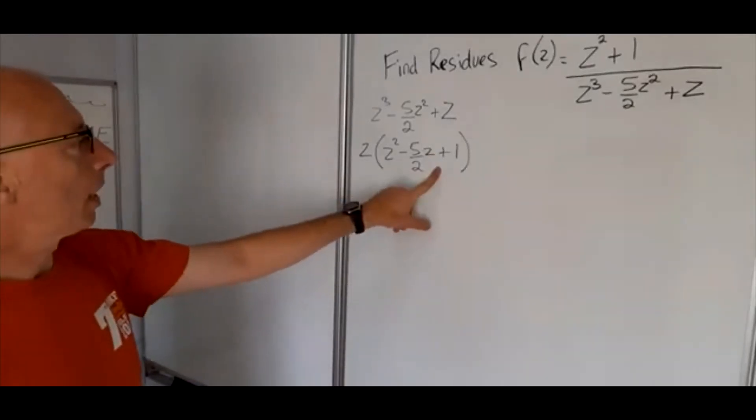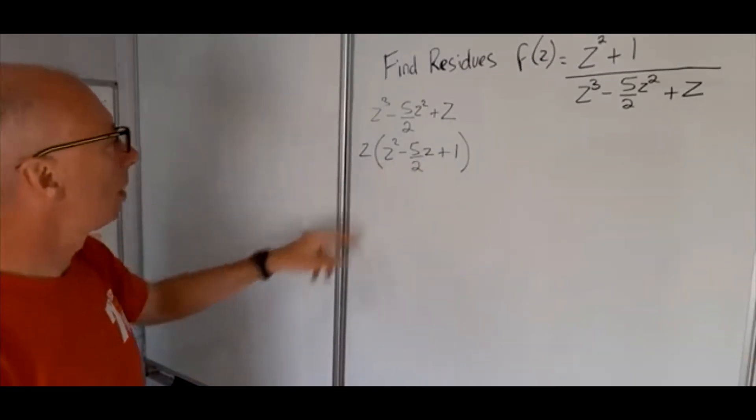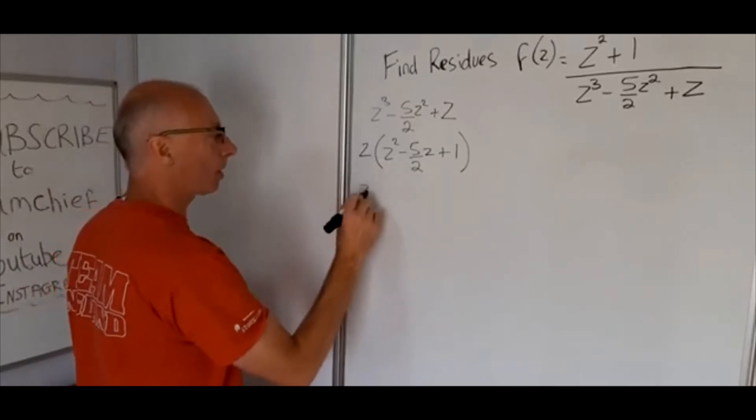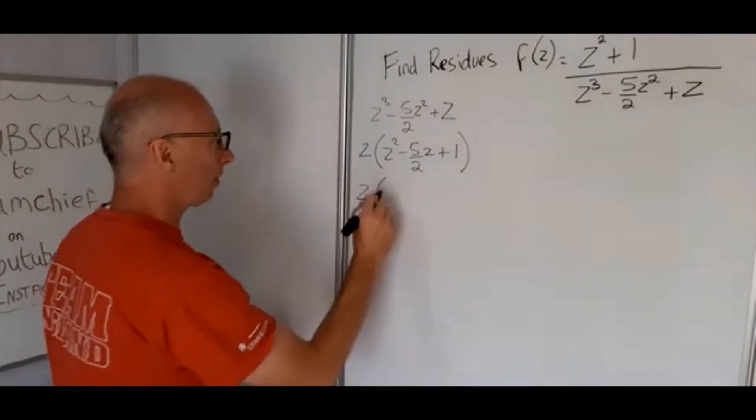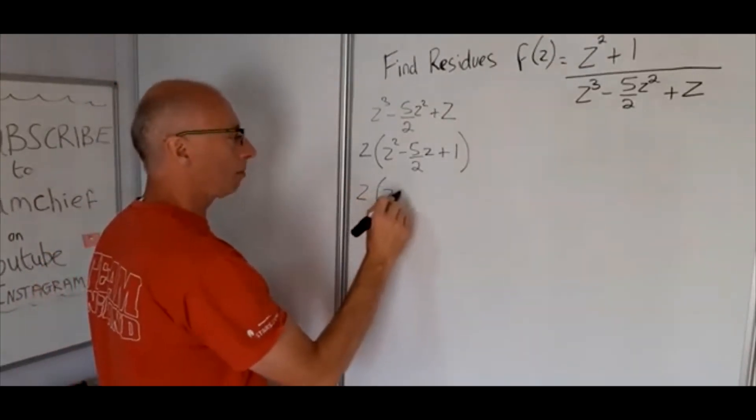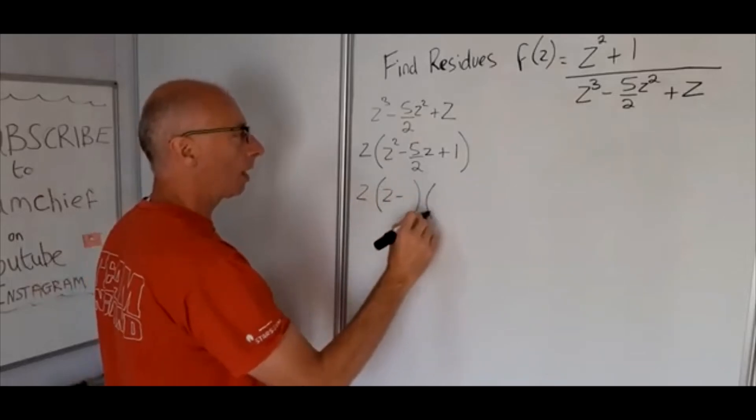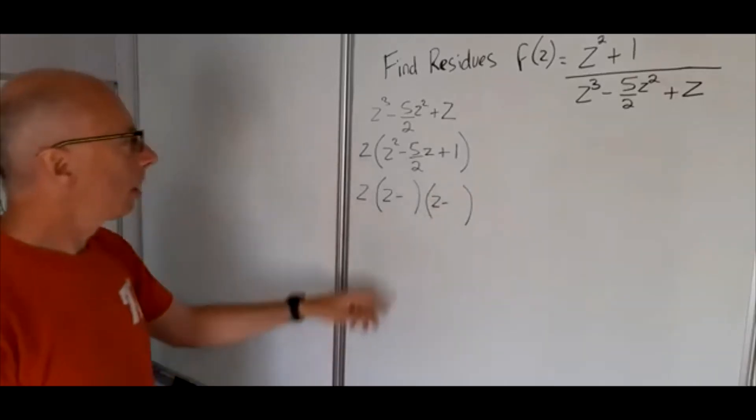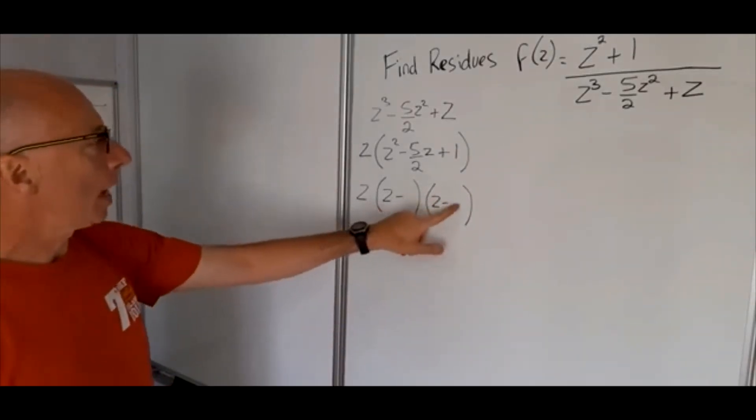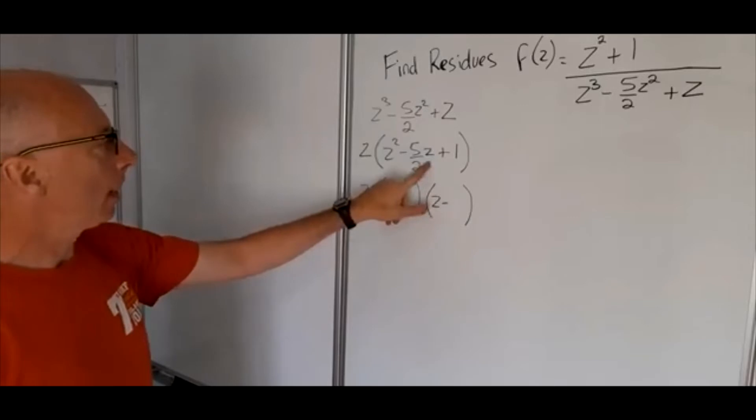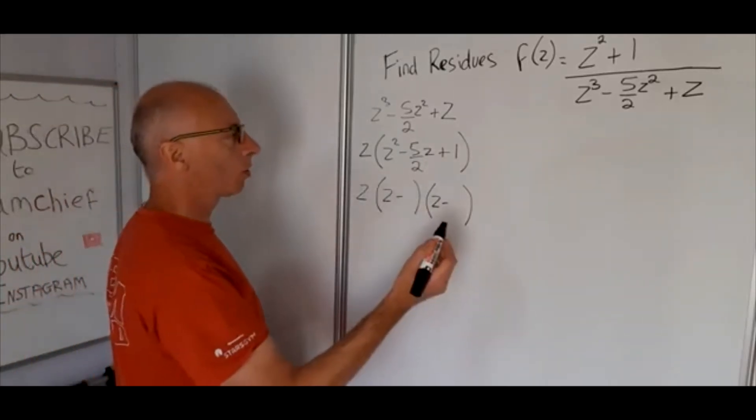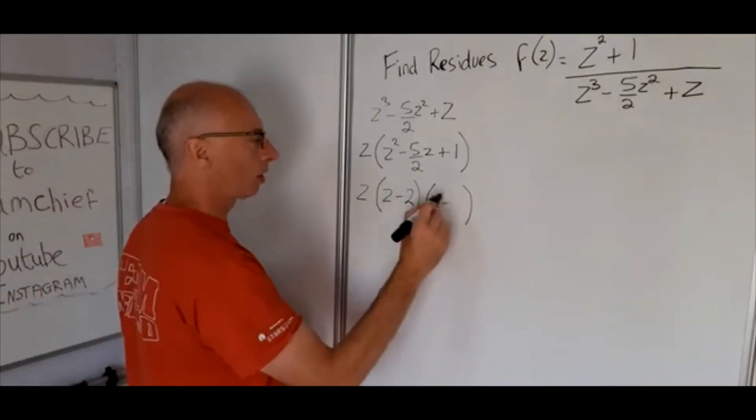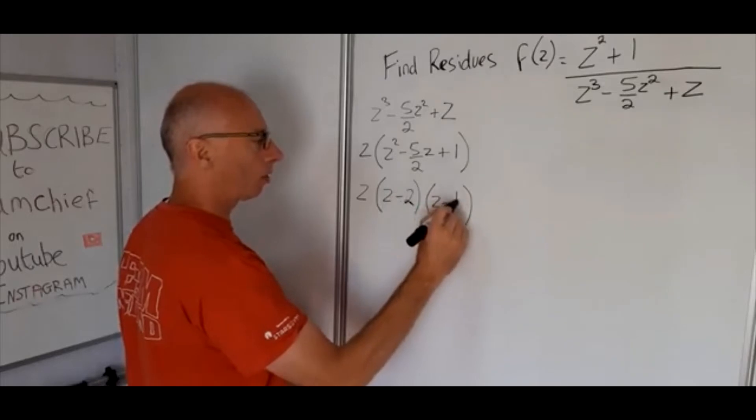So now we've got a quadratic left with this z. So we have z and then z minus something, and because it's a plus there we'll have z minus another number. As we want these two numbers to multiply to get 1 and then to add up to get minus 5 over 2, we're going to look at 2 and a half. So 2 and then 1 half.